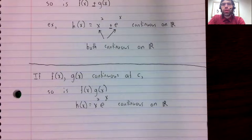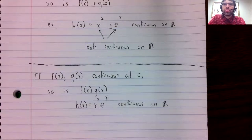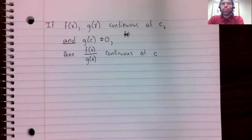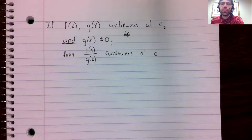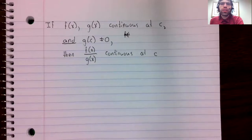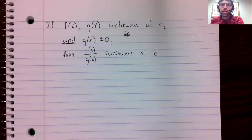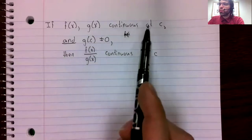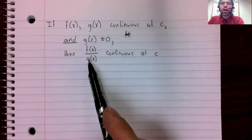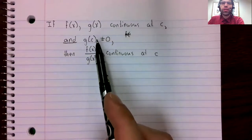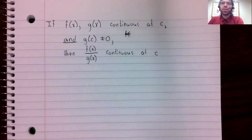Division is where things take a little turn for the worse, and we saw this with the limit laws as well, where we have a restriction that we didn't have for addition, subtraction, and multiplication. We cannot divide by zero. So if we're going to talk about continuity at c and we're going to divide by g(x), g(c) needs to not be zero.